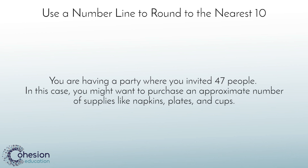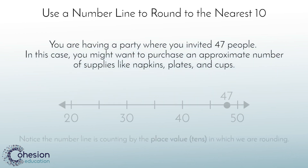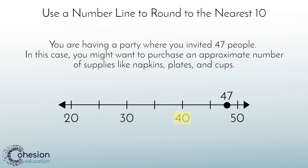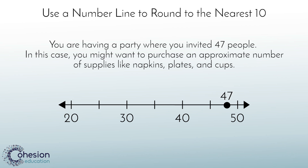Students may first be introduced to this concept through the use of a number line. This is an important step in the process because students must identify what two numbers the number in question falls between — in this case 40 and 50. Point out to students that 47 is closer to 50 than 40 on the number line, so when rounding to the nearest ten, 47 is closer to 50.